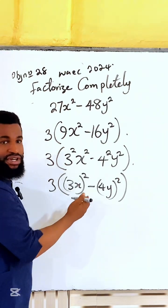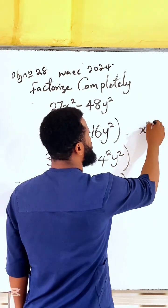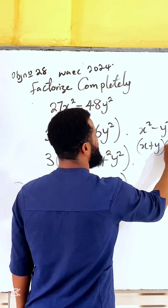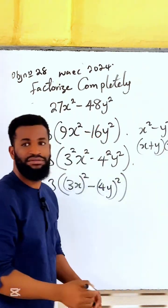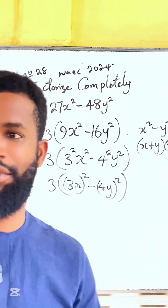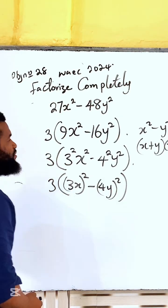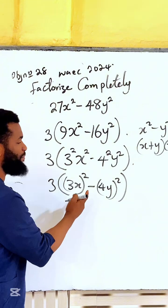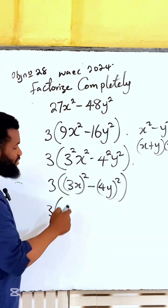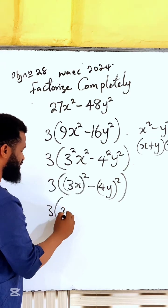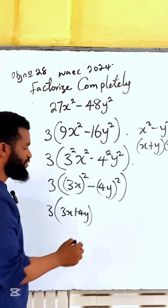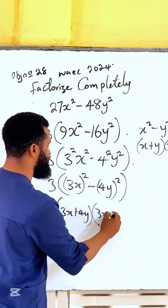Because this is difference of two squares, remember: if I have x² - y², it becomes (x + y)(x - y). So I'm going to do it here. This is 3(3x + 4y)(3x - 4y). These are the factors.